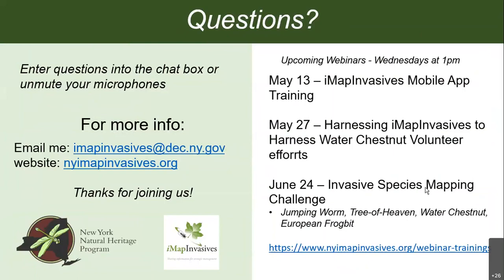There's a great question about how to get your group added to IMAP as an organization. You can email me at imapinvasive@dec.ny.gov and I will create the organization. I'd just need to know what you want the title to be and who you want as an admin. At that point the admin will be able to accept people into the group.